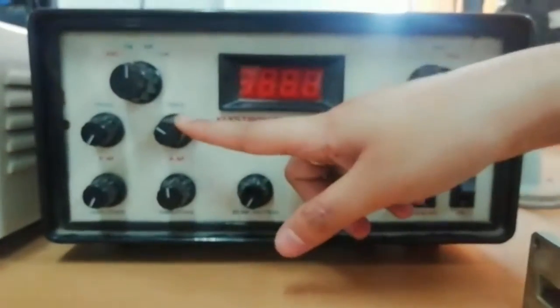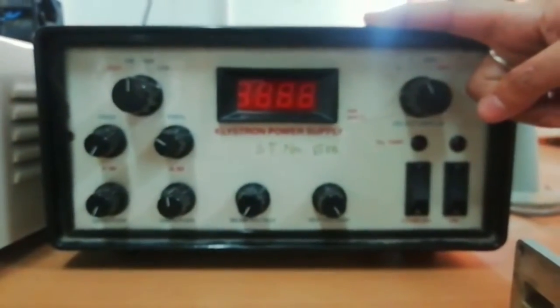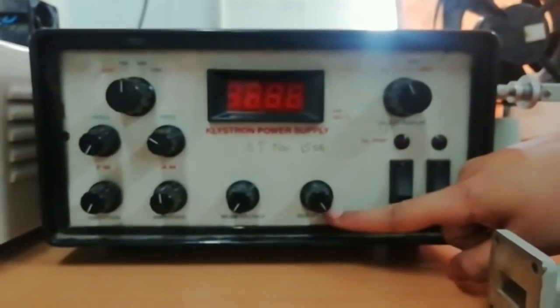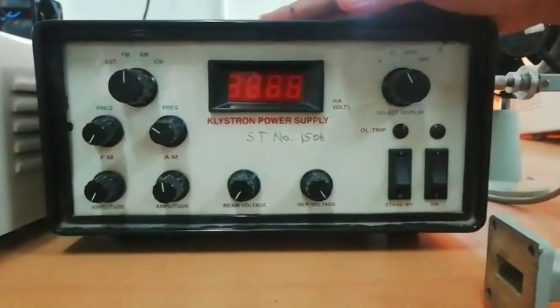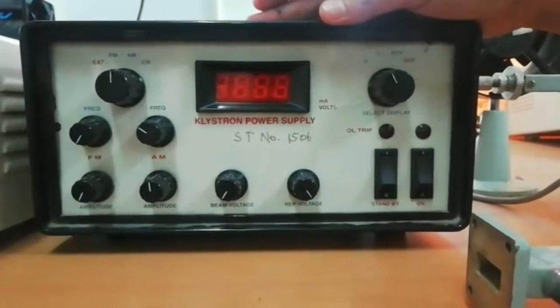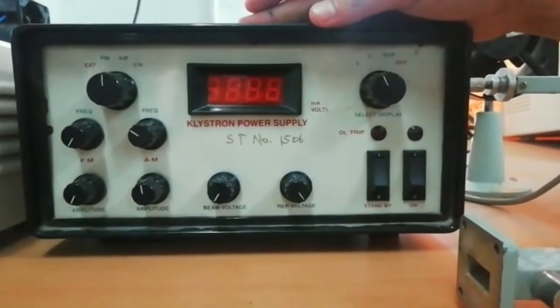The beam voltage may be continuously varied and is indicated on the front panel. The beam voltage can range from 200 volts to 450 volts and the maximum beam current is 50 milliamperes.